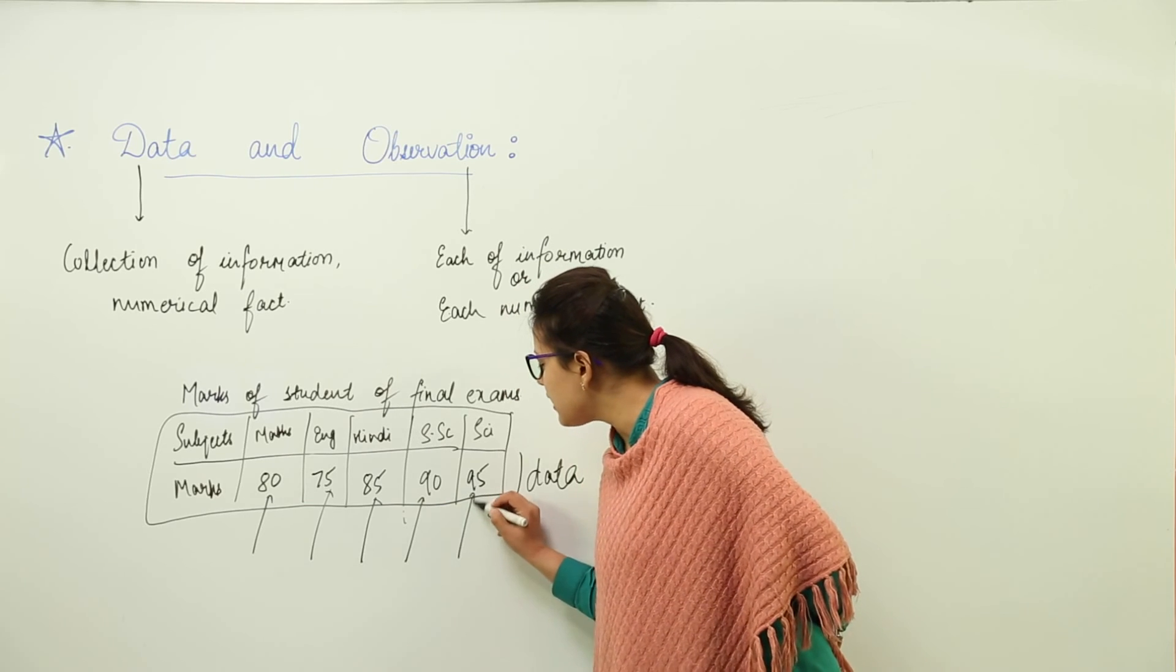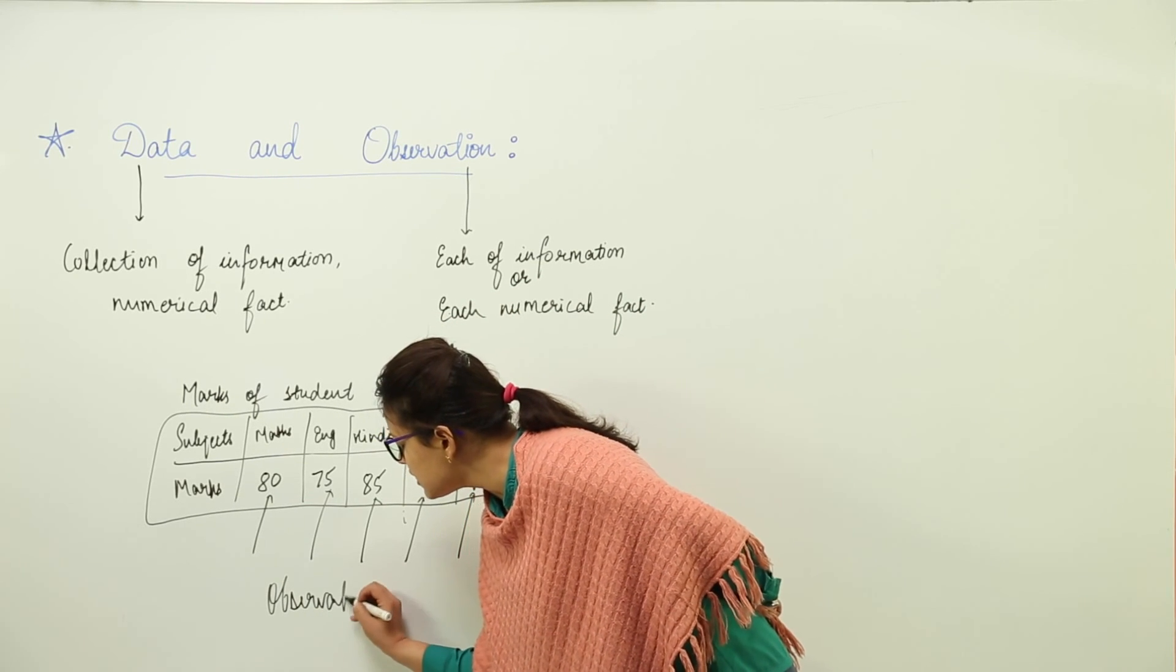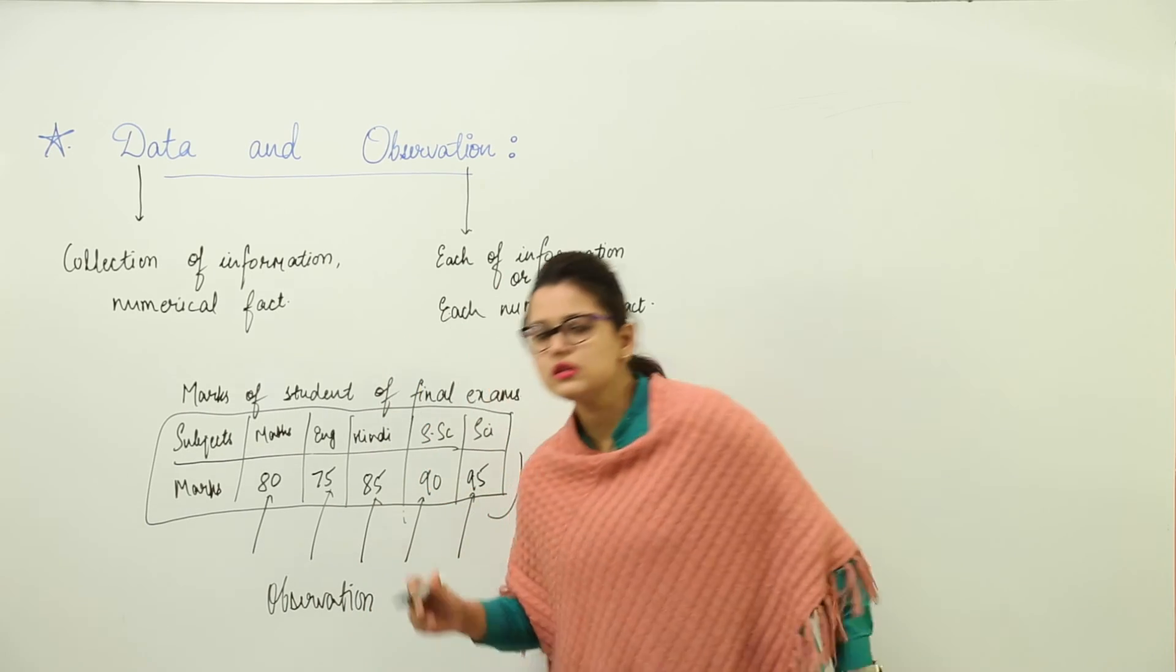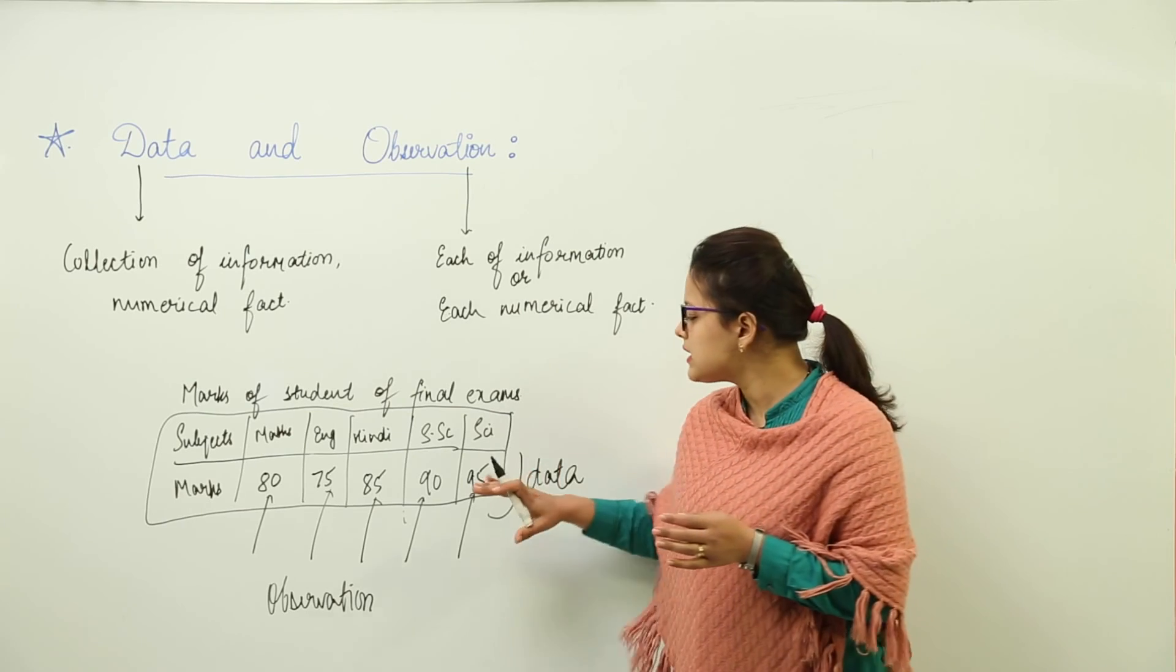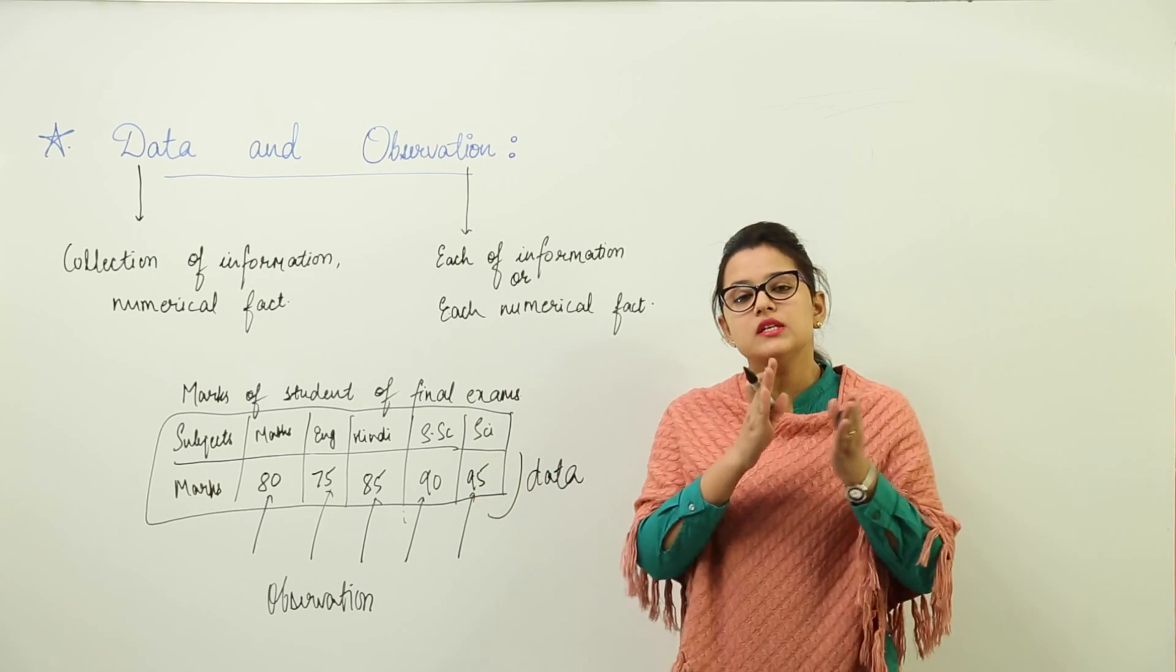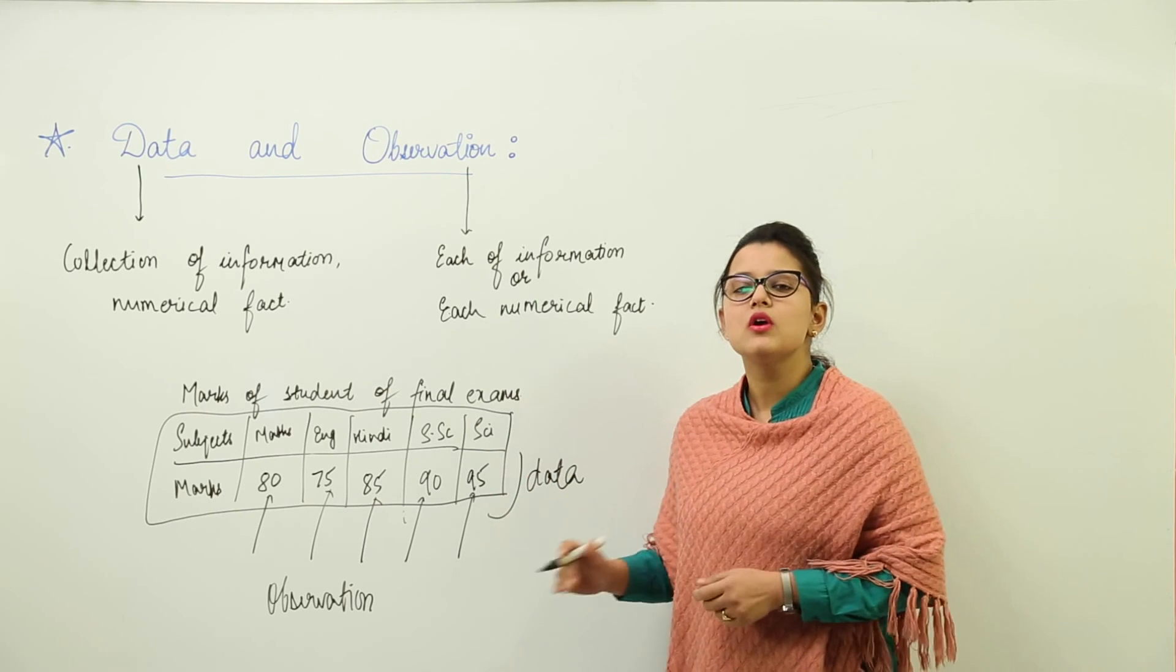What is observation? Each of these five values are representing my observation. That means the collection of all the values collected together is known as data, whereas each individual value out of the data is known as my observation.